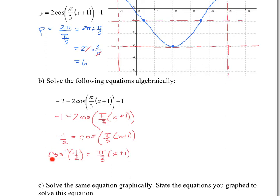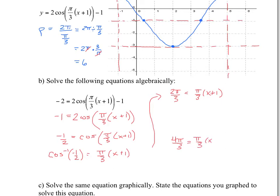We know this through exact values from the unit circle. Cosine equals negative 1/2 at 2π/3 and 4π/3 on the unit circle, since cosine corresponds to the x-coordinate. This creates two equations: 2π/3 = (π/3)(x+1) and 4π/3 = (π/3)(x+1).